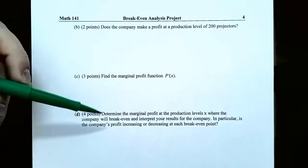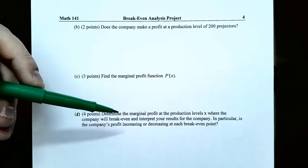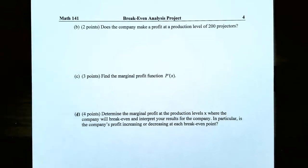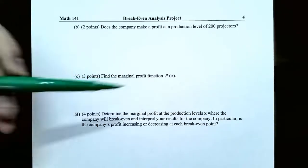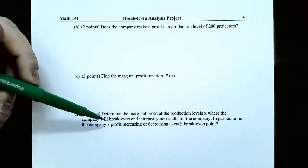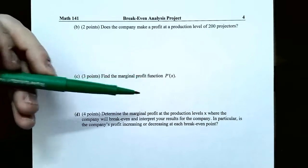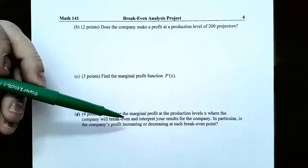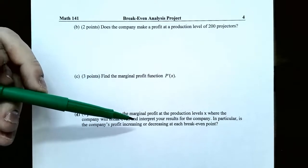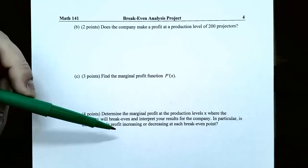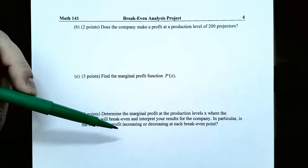Part D: determine the marginal profit at the production levels x where the company will break even, and interpret the results. In particular, is the company's profit increasing or decreasing at each break-even point? Use the break-even points found previously and the marginal profit function to find the change in profit at those production levels x, and interpret whether the profit is increasing or decreasing at each break-even point.